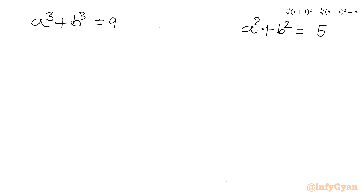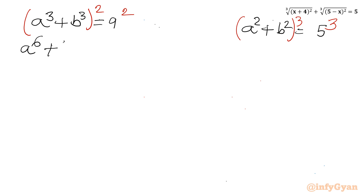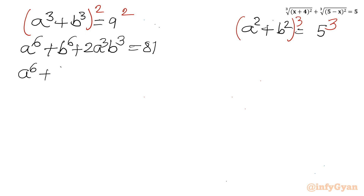Now I will consider squaring of the first equation and cubing of the second equation. We need to apply two identities from algebra: (a+b) whole squared and (a+b) whole cube. Here a is a cube and b is b cube. Applying (a+b)² to equation 2 gives: a to the power 6 plus b to the power 6 equals 81 minus 2·a cube·b cube.